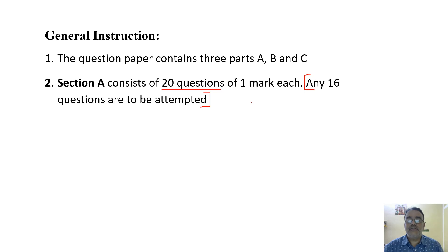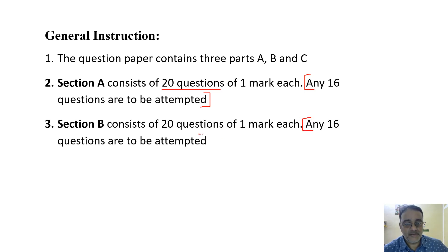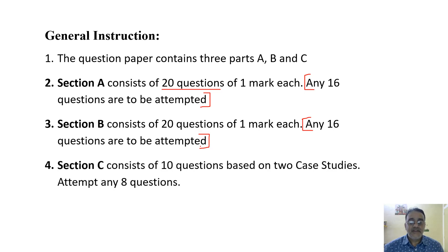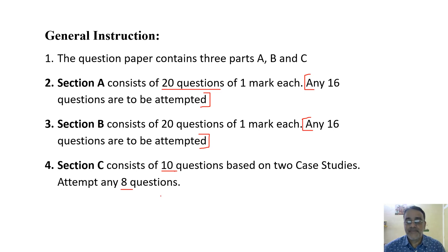Section B also consists of 20 questions of one mark each, and in that section also you have to attempt any 16 questions. The last section is case study questions — two case study questions with five questions each — and students have to attempt four questions from each case study, meaning eight questions out of ten.